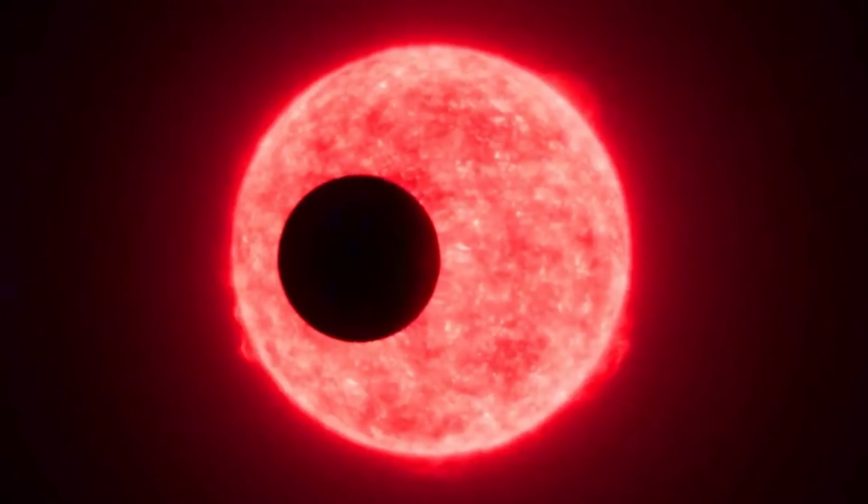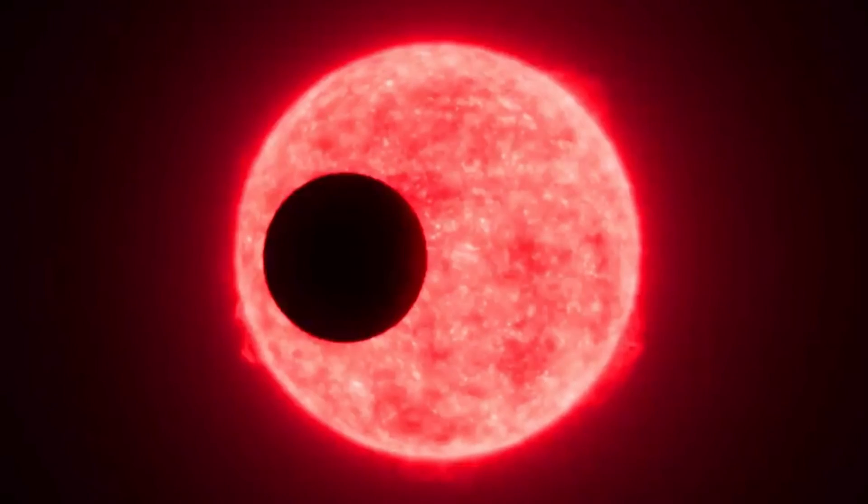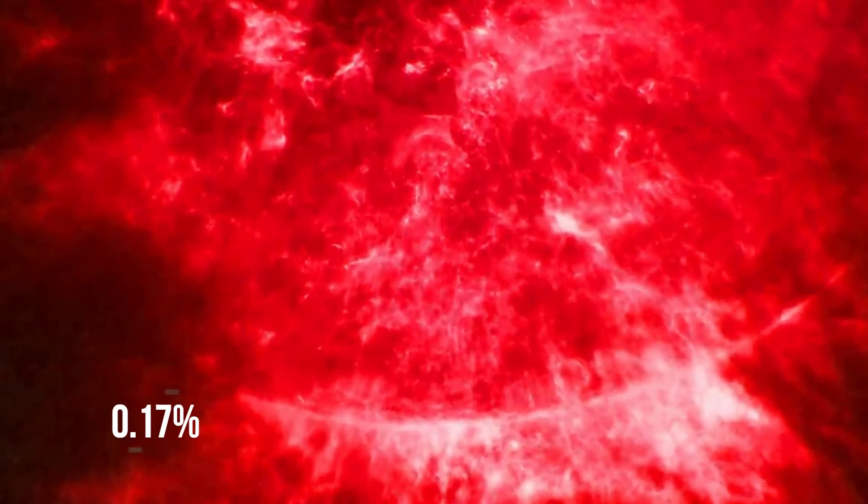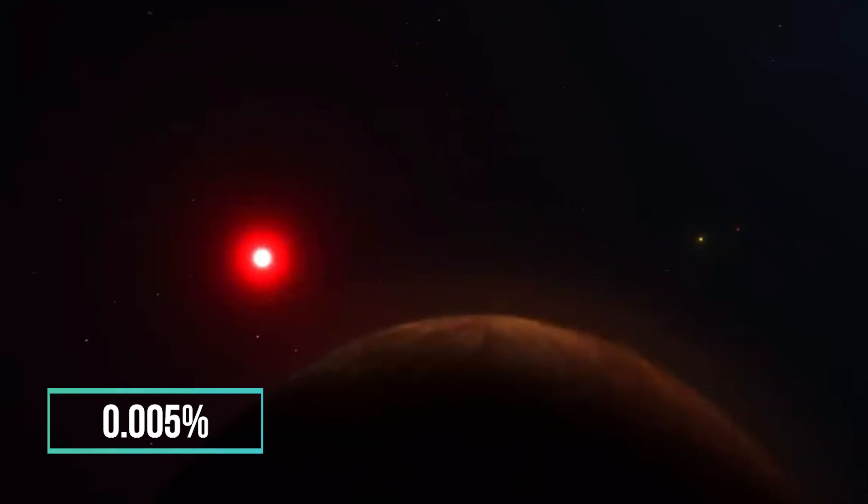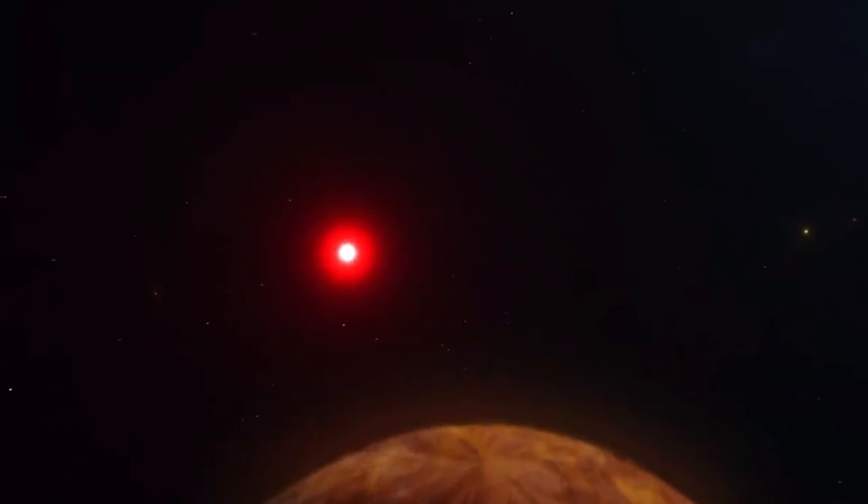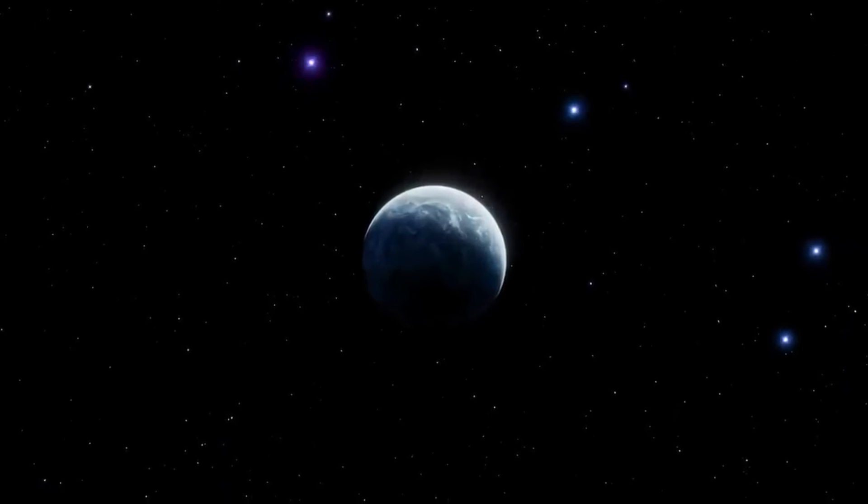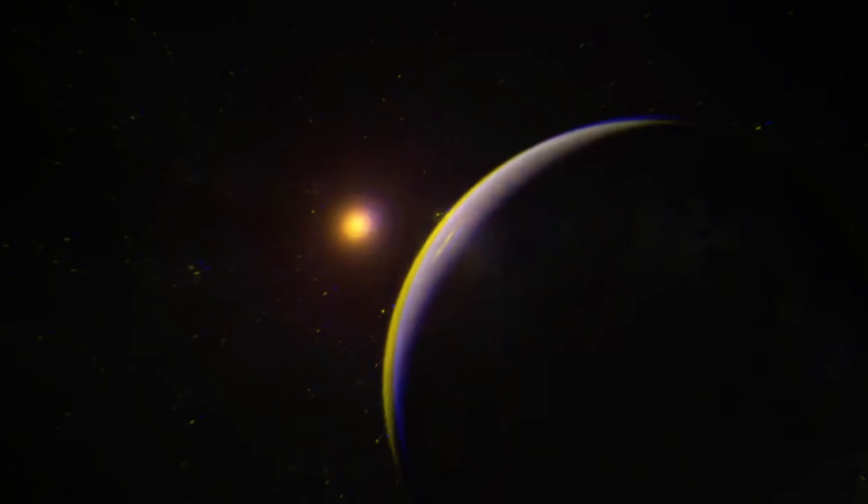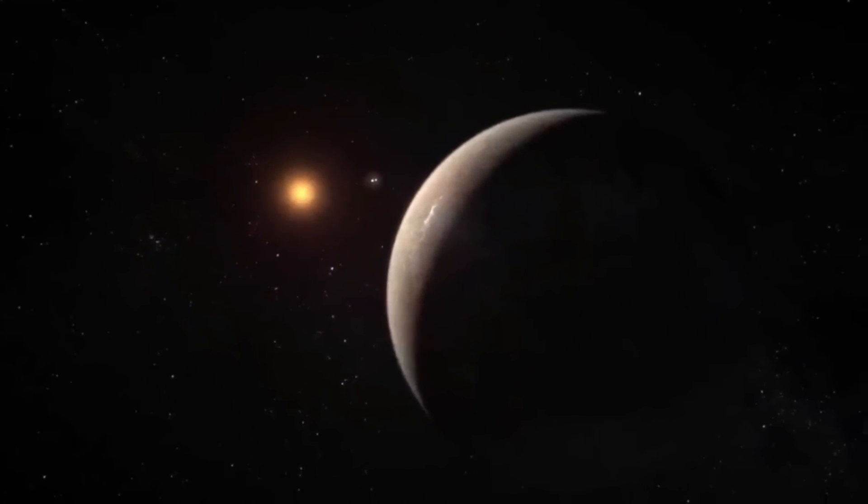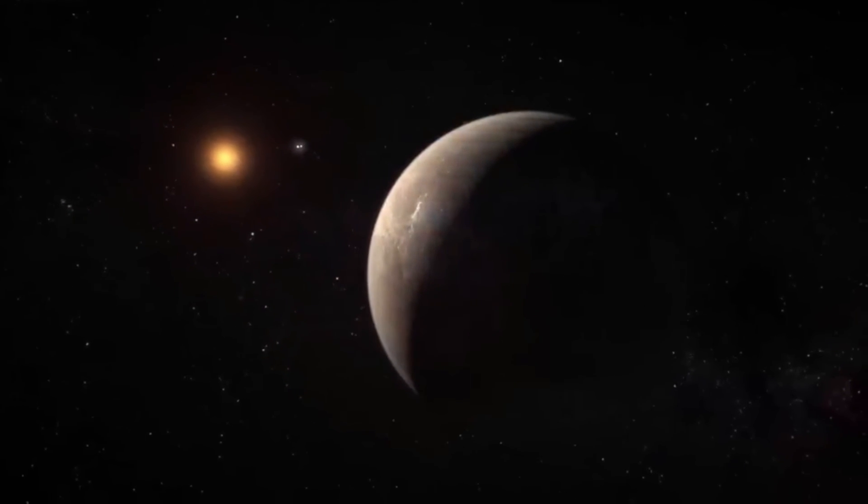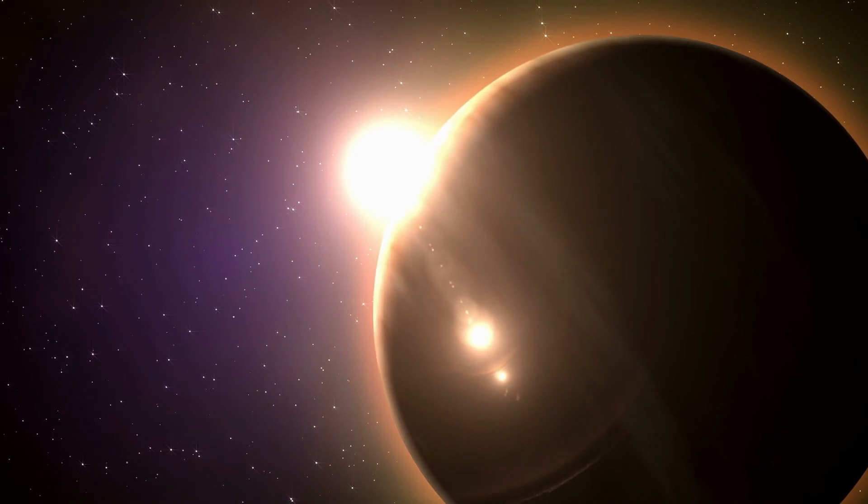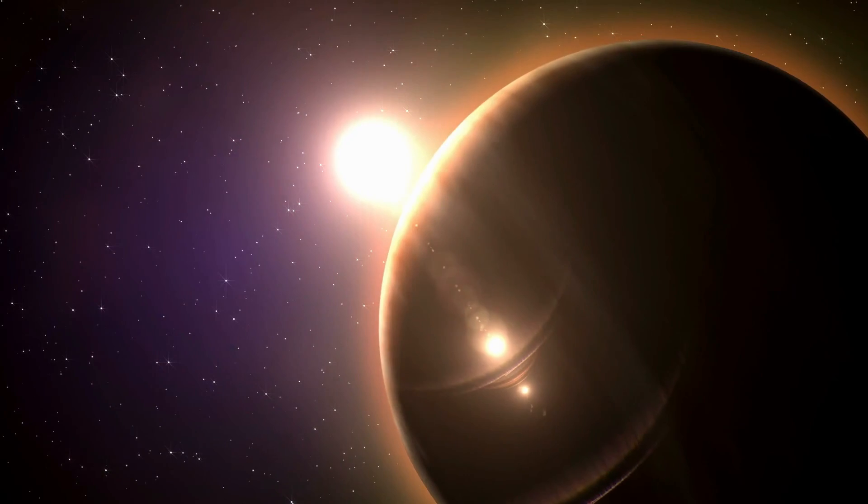The red dwarf star Proxima Centauri, which is the parent star of Proxima b, only gives off about 0.17% of the energy and 0.005% of the visible light that the sun does. Even though it is only exposed to a small amount of radiation, Proxima b gets about 70% of the infrared energy from the sun that the Earth does because it is closer to its sun and has a different orbit.